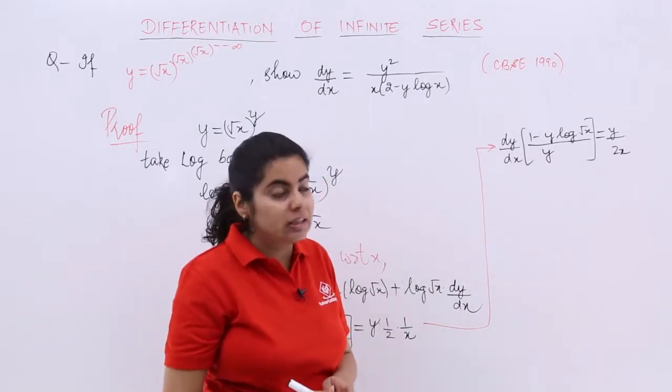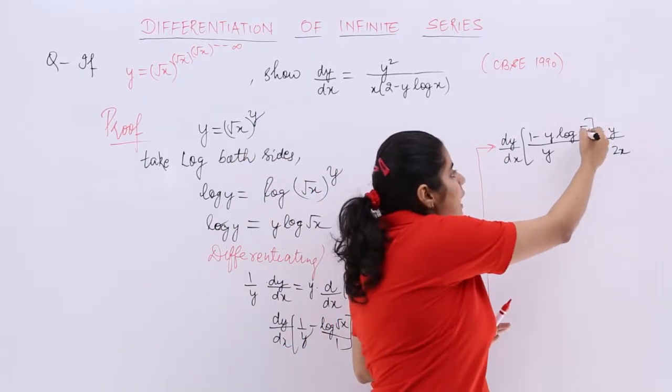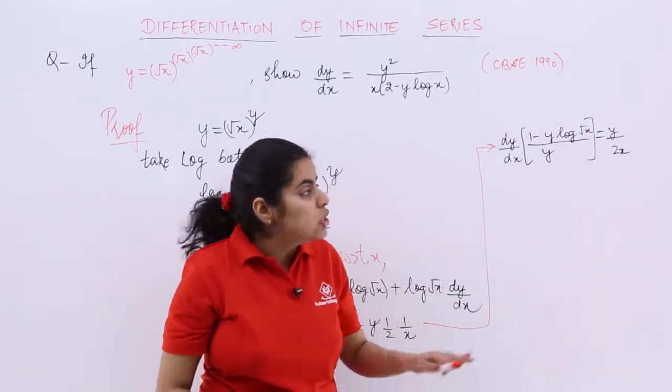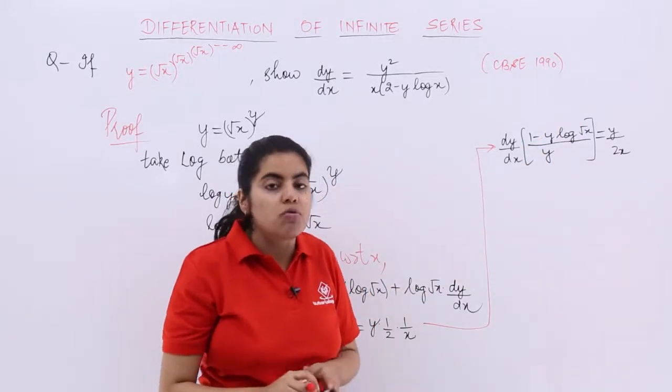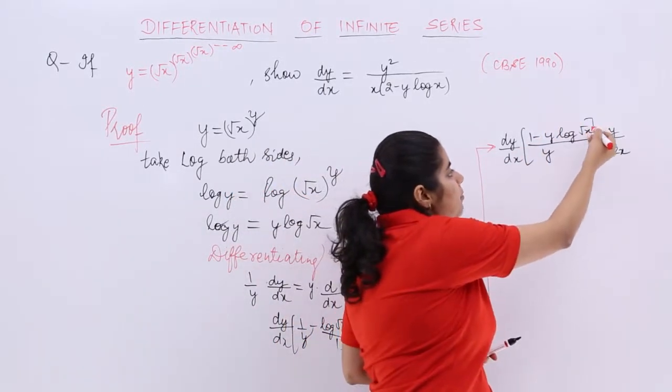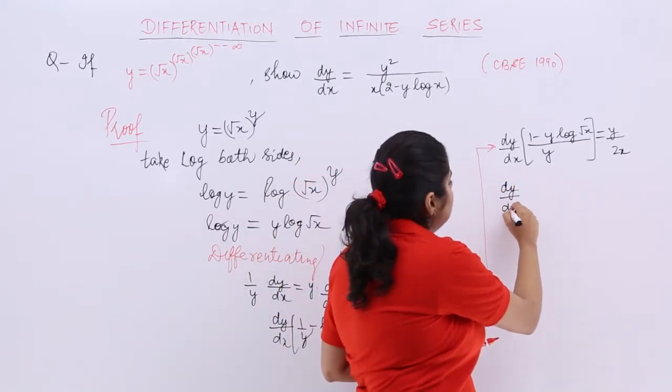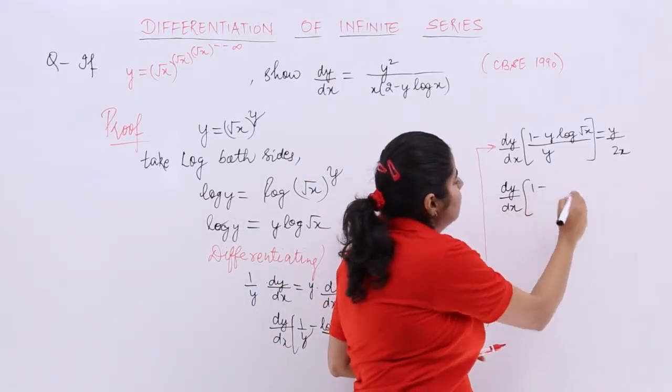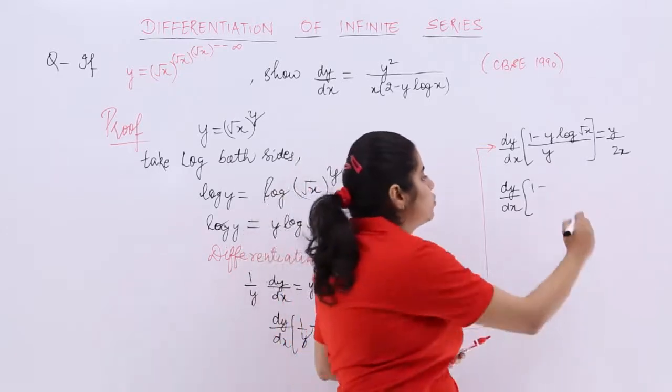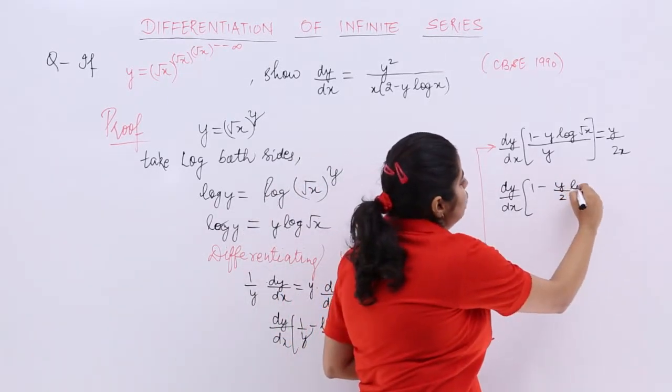Now one more thing can be done. One thing that you can do is, again this has the power. So you can apply the power formula. What is this? It has the power 1 by 2 which comes outside. So you are doing this. dy by dx, 1 minus the power 1 by 2. So it becomes y by 2 log x. In the denominator again, we have y and here we have y upon 2x.